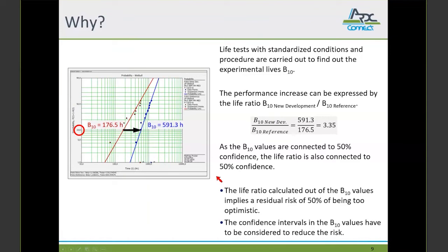Thus the B10 ratio is also connected to confidence of 50%. So with 50% chance the ratio can be greater than 3.35 or with 50% chance it can be less than 3.35. This means forwarding a life increase factor for this example implies a risk of 50% to be too optimistic. A risk of 50% can result in a large number of customer complaints. To avoid this, the confidence interval of the B10 values should be considered so that the life increase with higher confidence can be calculated.